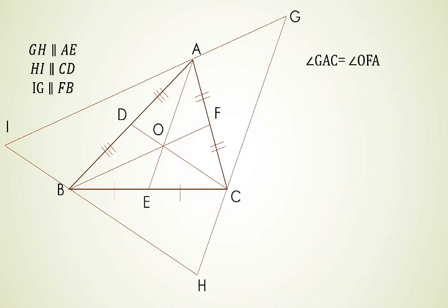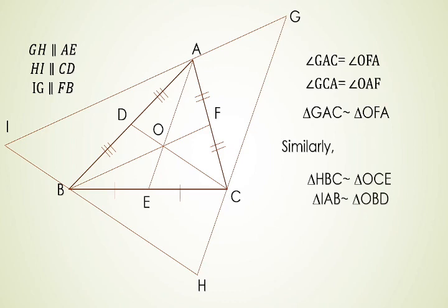Here we see that angle GAC is equal to angle OFA, as these are alternate angles. Similarly, angle GCA is equal to angle OAF. Now in triangles GAC and triangle OFA, two angles are equal, so we conclude that triangle GAC is similar to triangle OFA. Similarly, triangle HBC is similar to triangle OCE and triangle IAB is similar to triangle OBD.